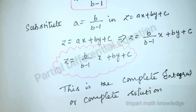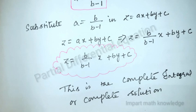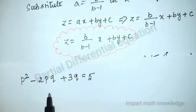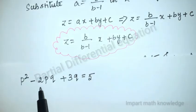The procedure is simple: assume z = ax + by + c, differentiate to get p = a and q = b, substitute into the given equation to find a in terms of b (or vice versa), then substitute back into z = ax + by + c to get the complete integral.